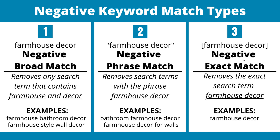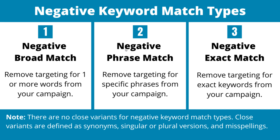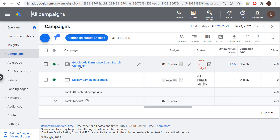Last but not least is negative exact match, which will just remove the exact search term farmhouse decor — or whatever your negative exact match keyword is. Now for close variants and misspellings, if someone were to misspell farmhouse — for example, forgetting the e at the end — then any of these negative keyword match types would not remove that search term from your campaign. When you're targeting keywords on the Google Search Network it includes many variations, whereas negative keywords have to be exactly what people are typing in.